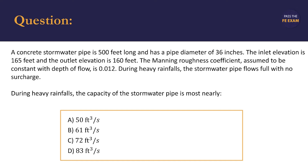The problem statement reads: a concrete stormwater pipe is 500 feet long and has a pipe diameter of 36 inches. The inlet elevation is 165 feet and the outlet elevation is 160 feet. The Manning roughness coefficient, assumed to be constant with depth of flow, is 0.012. During heavy rainfalls, the stormwater pipe flows full with no surcharge. The capacity of the stormwater pipe is most nearly: A) 50 cubic feet per second, B) 61 cubic feet per second, C) 72 cubic feet per second, or D) 83 cubic feet per second.